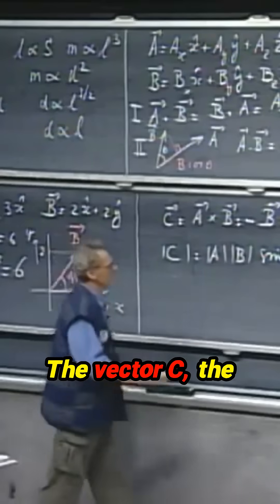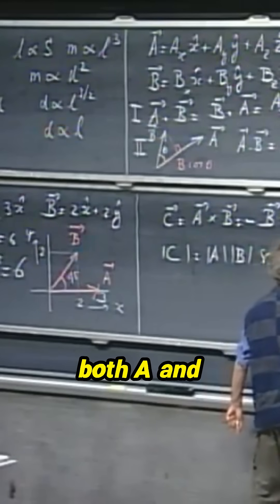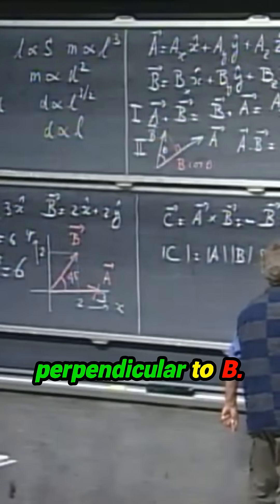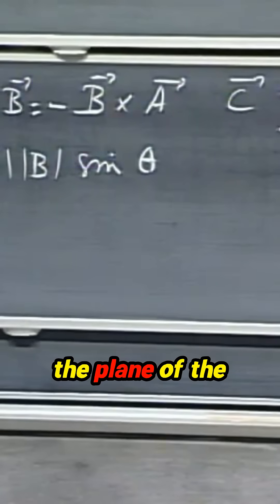The vector C, the cross product, is always perpendicular to both A and perpendicular to B. In other words, it's perpendicular to the plane of the two vectors.